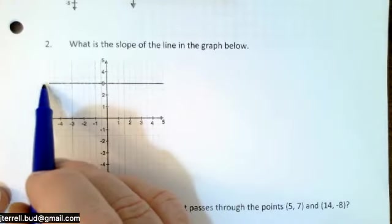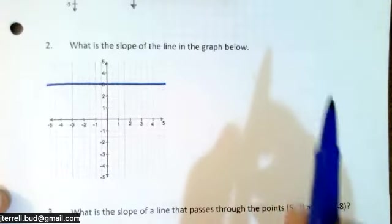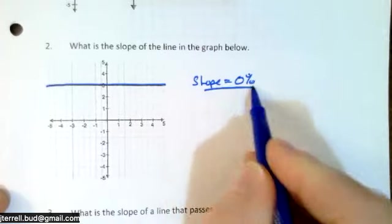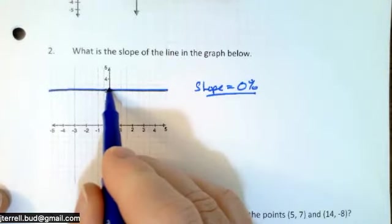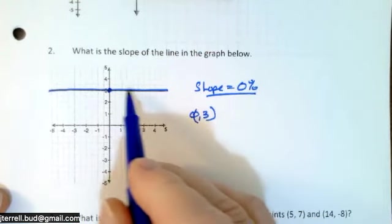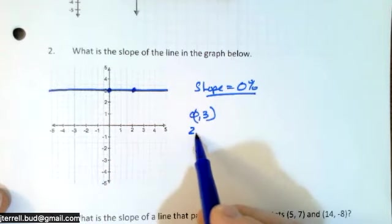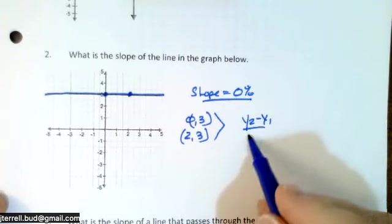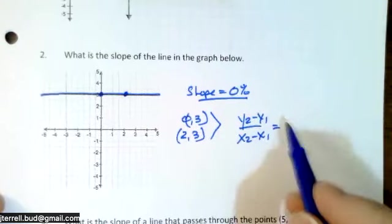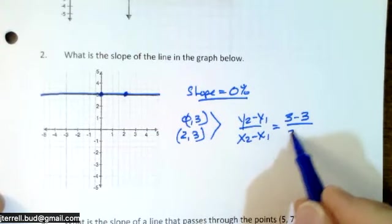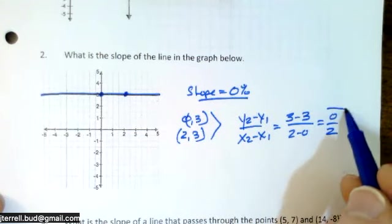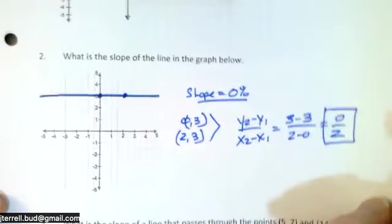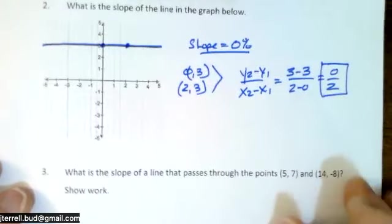Number two is the opposite of the previous one. I have a horizontal line, which is like a flat road, so the slope is zero. If you're not 100% sure, go ahead and put in the points: (0, 3) and (2, 3). Using y₂ minus y₁ over x₂ minus x₁ gives 3 minus 3 over 2 minus 0, which is 0 over 2. You put that in your calculator and you get zero.